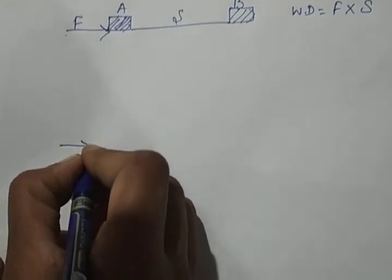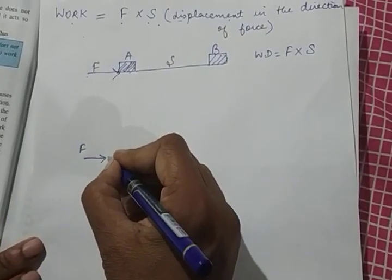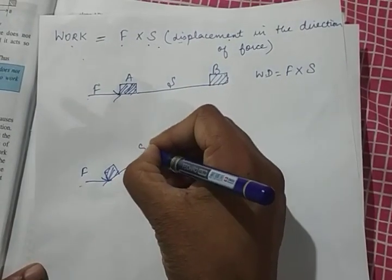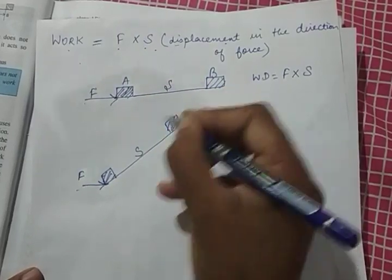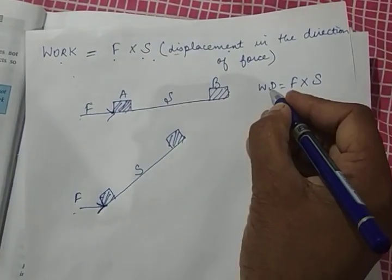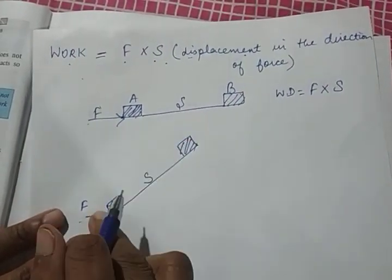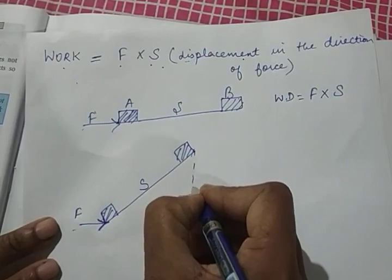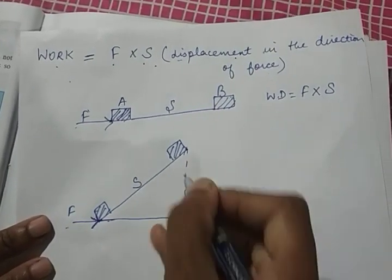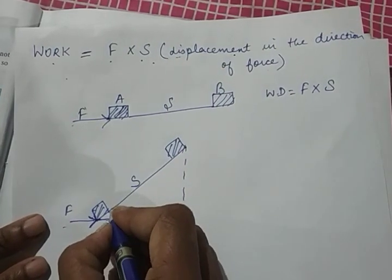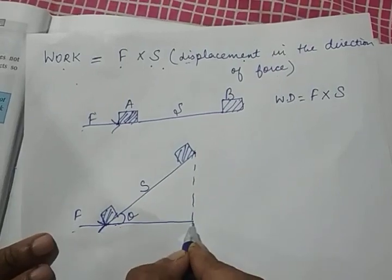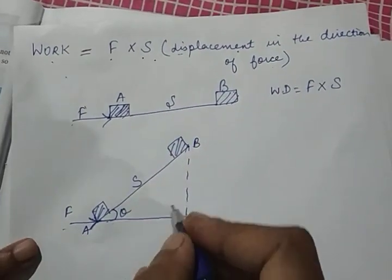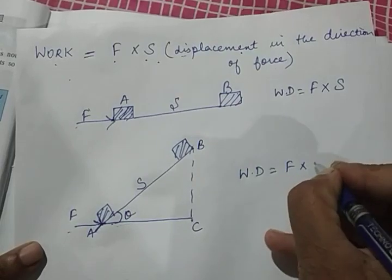There can be a case where you apply force in one direction, but the body is moving in some other direction. In this case, I can't just use F into S because displacement is not in the direction of force. So what to do? We are going to drop a perpendicular and draw a line, forming a right-angled triangle. Let us assume that the body is moving at an angle theta with a reference line, and mark the points as A, B, and C. According to the formula, work done will be F into AC — the displacement in the direction of force.